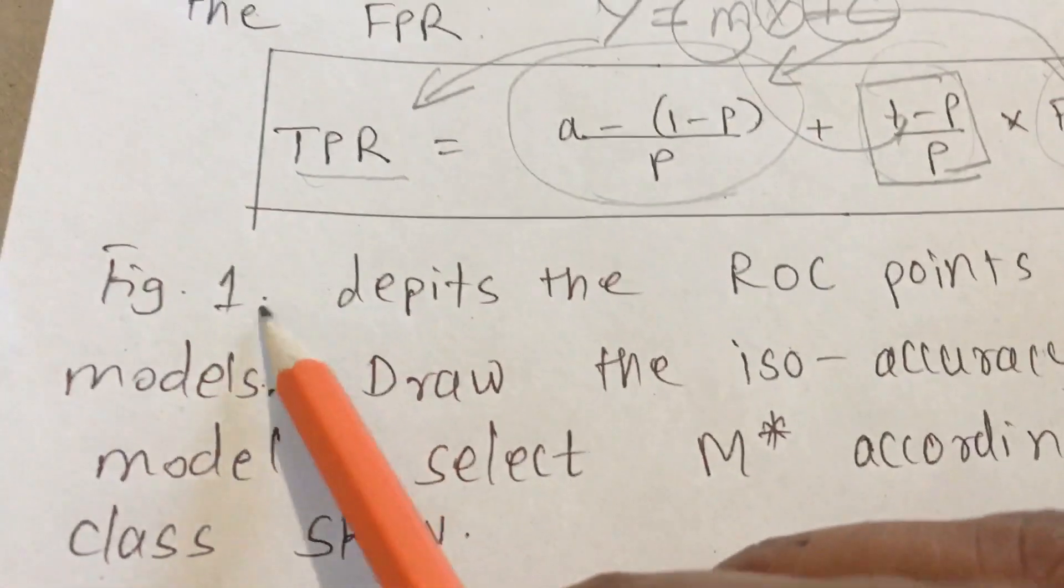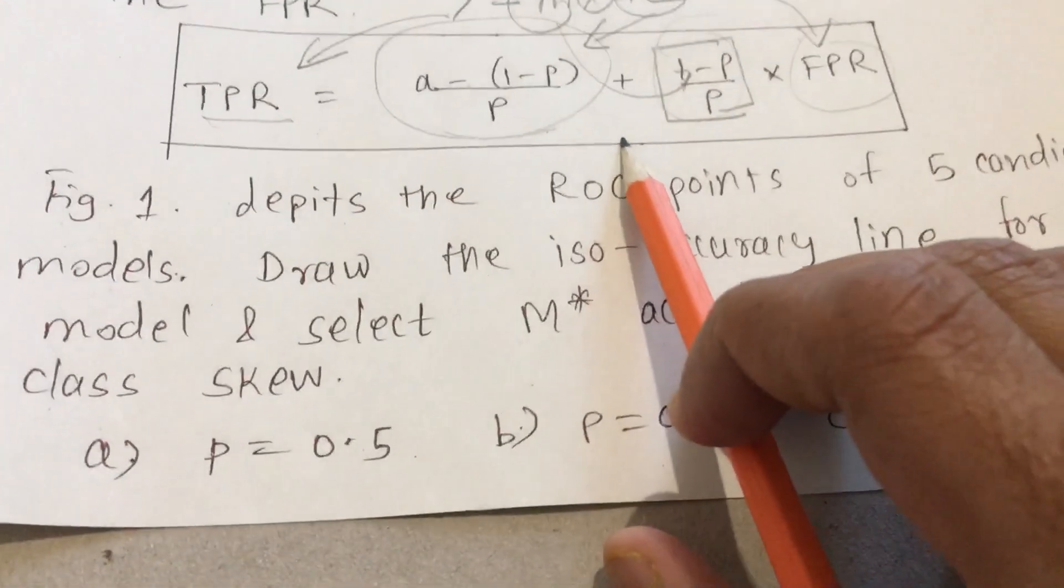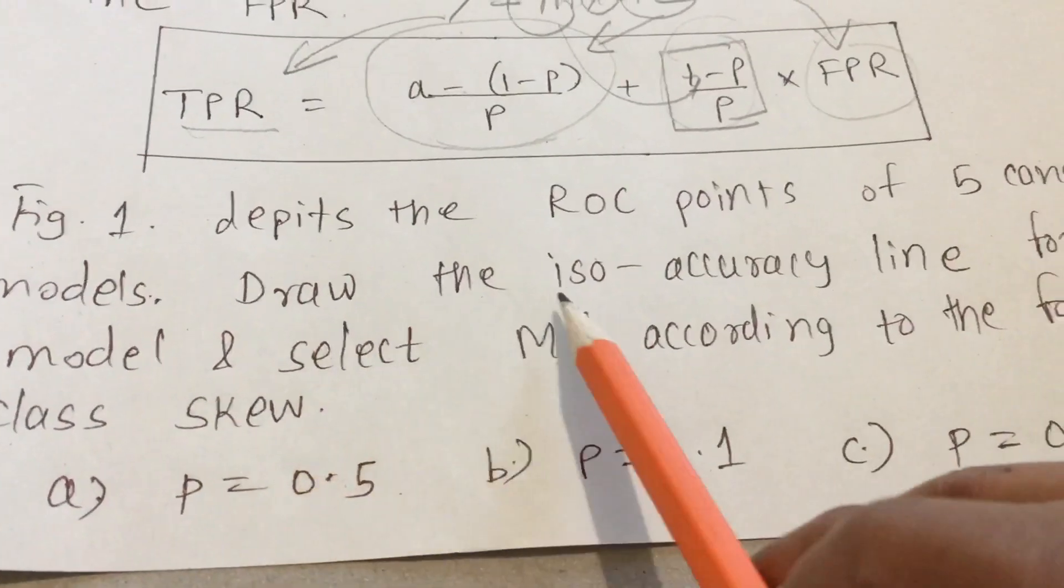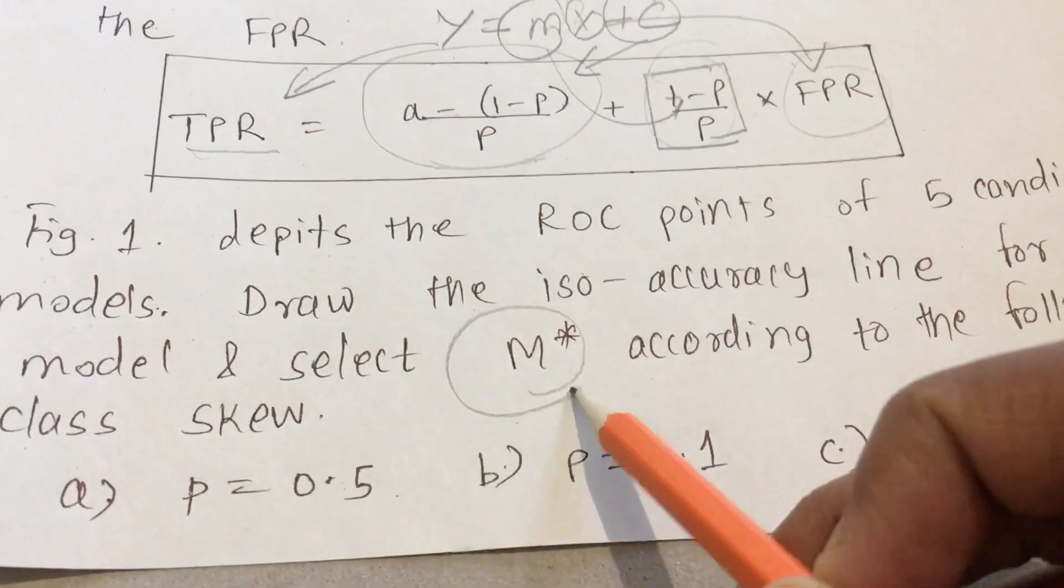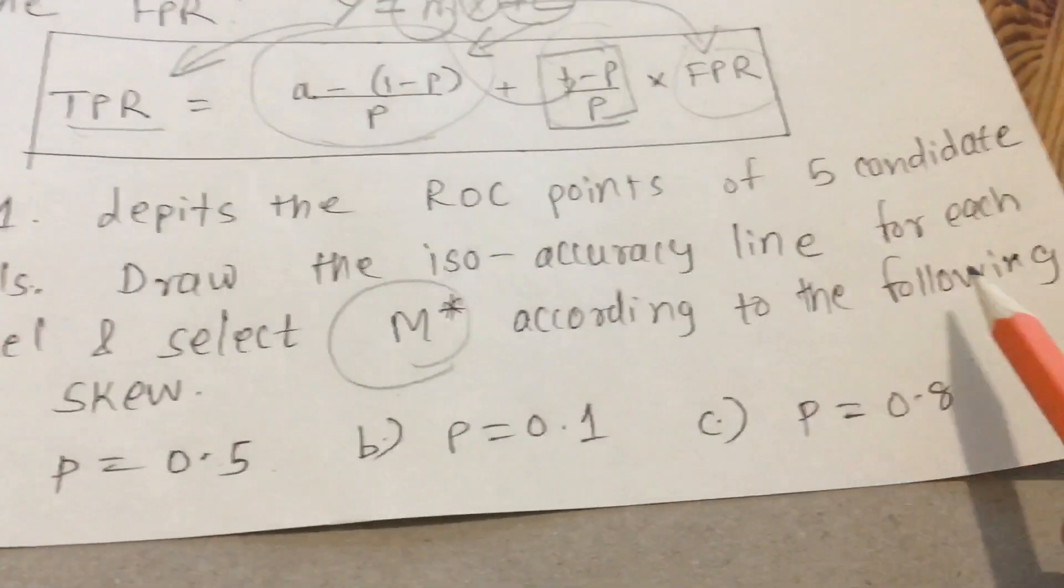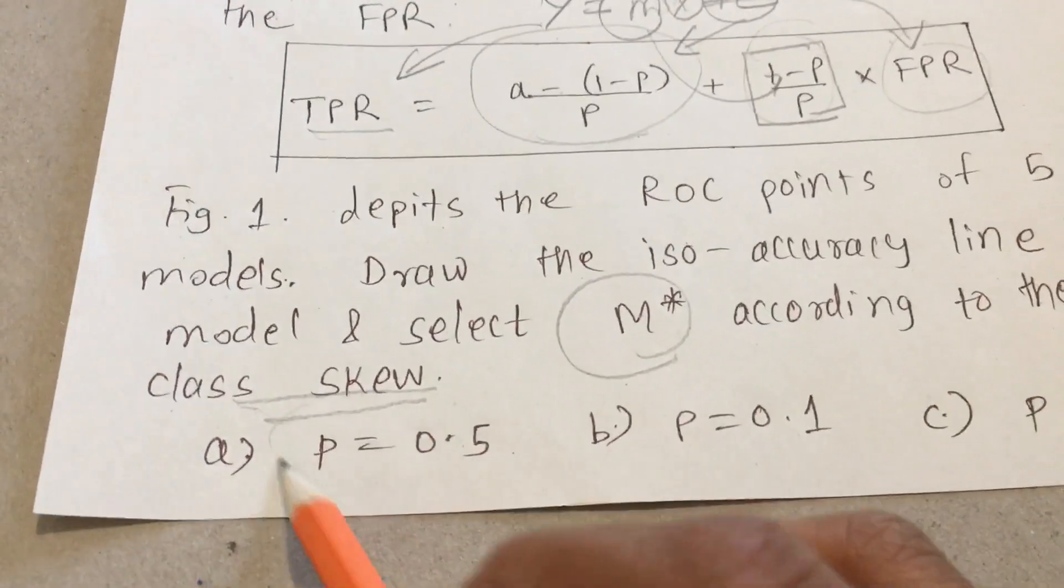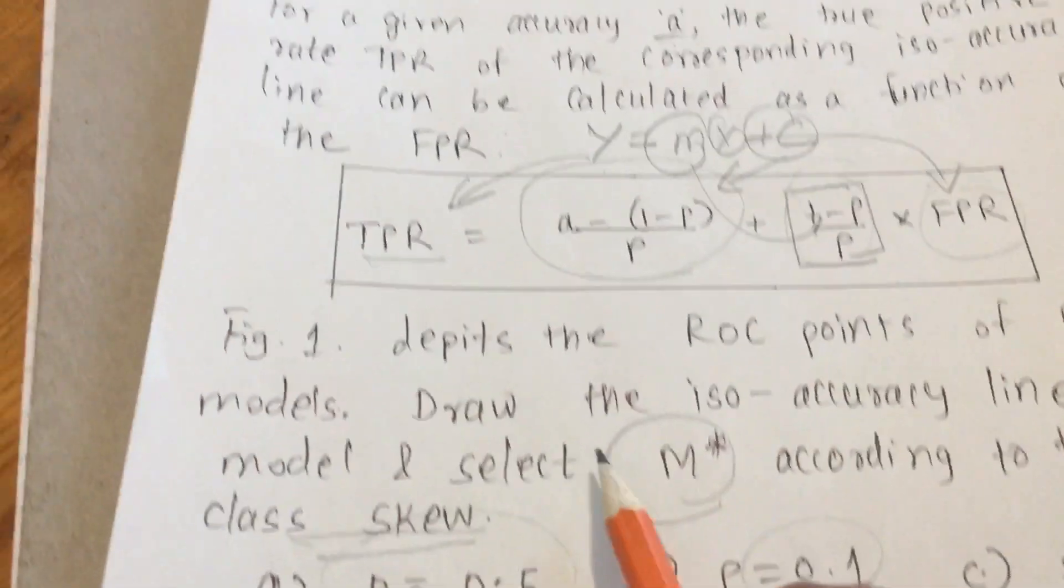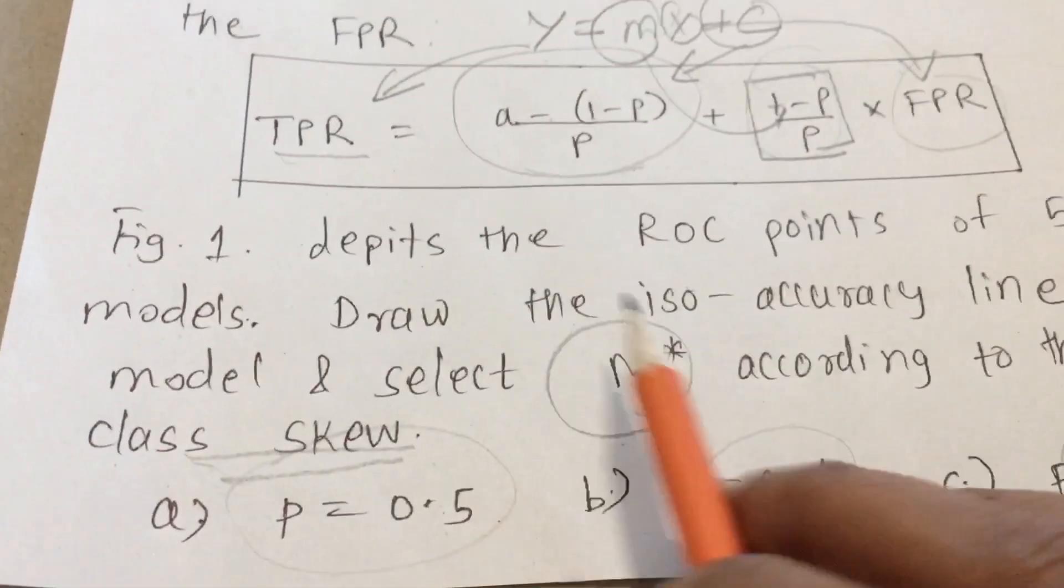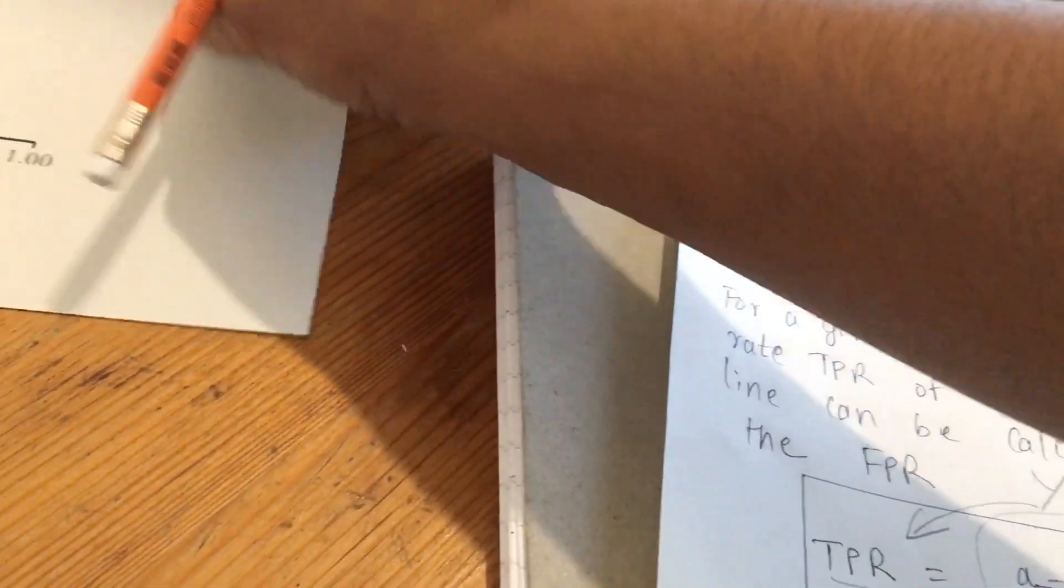In this we have one figure. It depicts the ROC points of five candidates. We have five models and you need to draw the iso-accuracy line for each model and select the M star according to the following class skew - you have the class imbalance probabilities given: 0.5, 0.1, and 0.8. With this data we need to plot some tables and calculate the accuracy and also draw the lines.